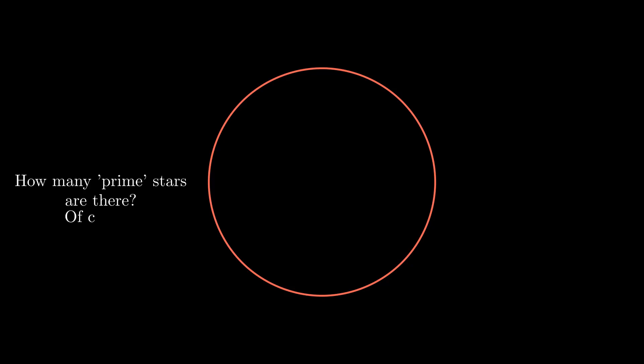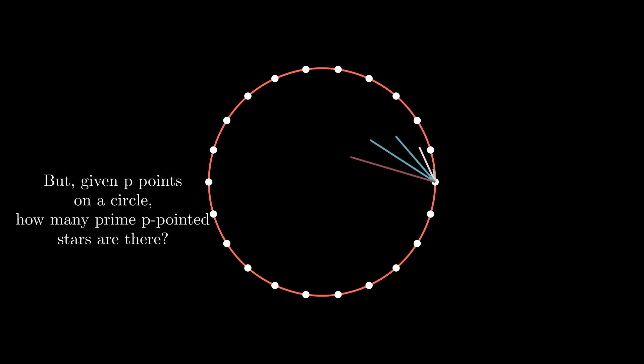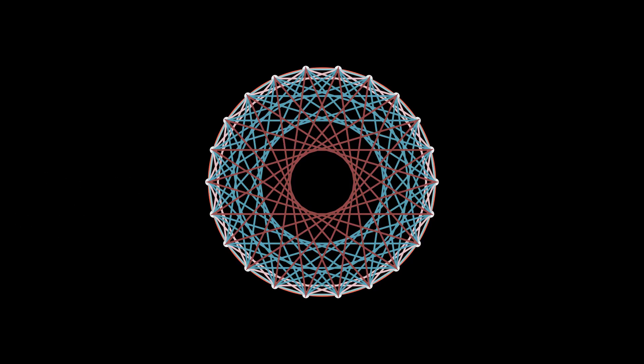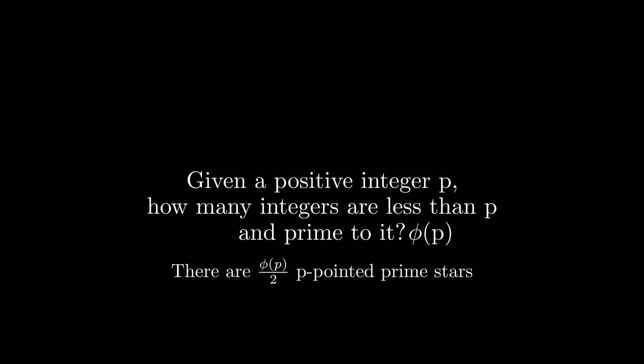We are led to an interesting problem. How many prime stars are there? Of course, an infinity. But how many p-pointed prime stars are there? This is the same as asking, up to a number p, how many numbers are prime to p? If we call this value phi of p, then there are phi of p divided by two p-pointed prime stars.